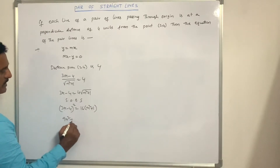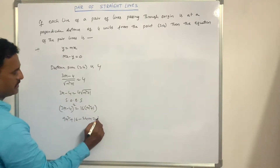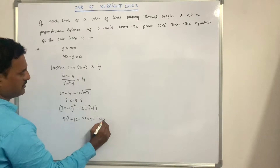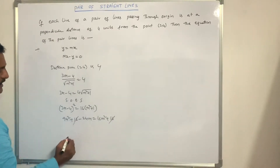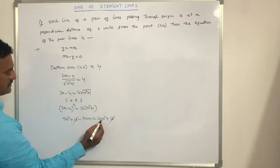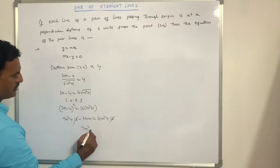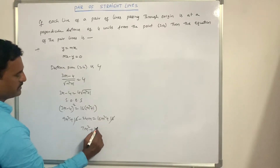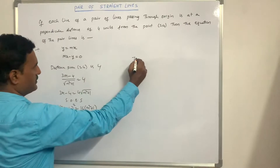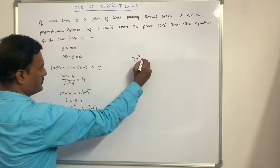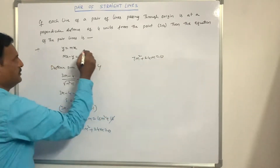Expanding using (a minus b)²: 9m² + 16 minus 24m equals 16m² + 16. The 16s cancel, giving 16m² minus 9m², so 7m² + 24m = 0.